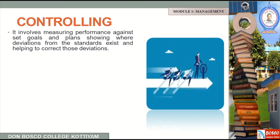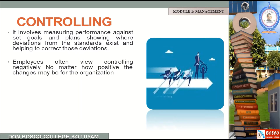In case where we have deviations, we will have to fix them. It is a controlling function. Employees often view controlling negatively, no matter how positive the changes may be for the organization. Employees' point of view sees it as a negative factor, so we have to control that negative factor.